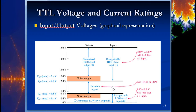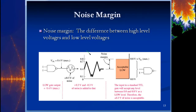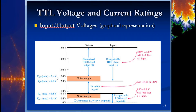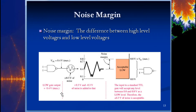The noise margin is the difference between the high-level voltages and the low-level voltages. The minimum output high is 2.4 V; the minimum input high is 2 V — that 0.4 volt difference is the noise margin. For a low: the input will accept anything between 0 and 0.8 V as a low, so 0.3 volts of noise is acceptable. There may be a little static on the line — that's why we use error checking, comparators, and logic gates to detect errors.